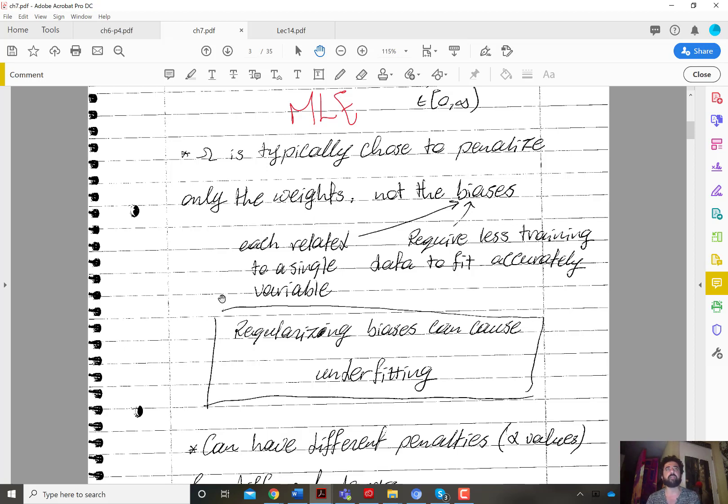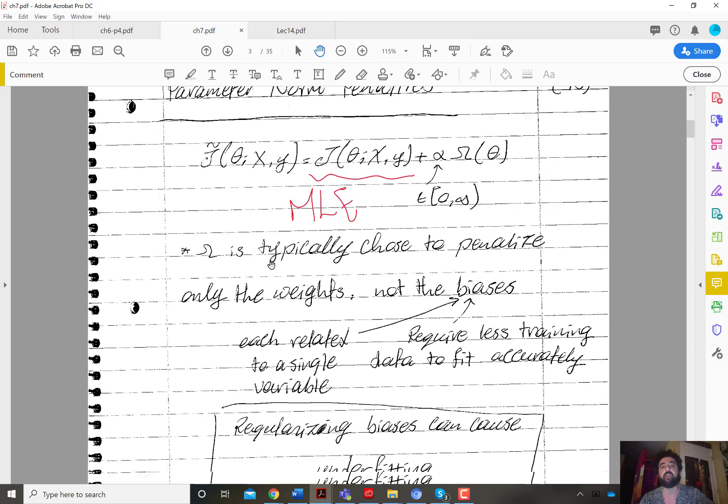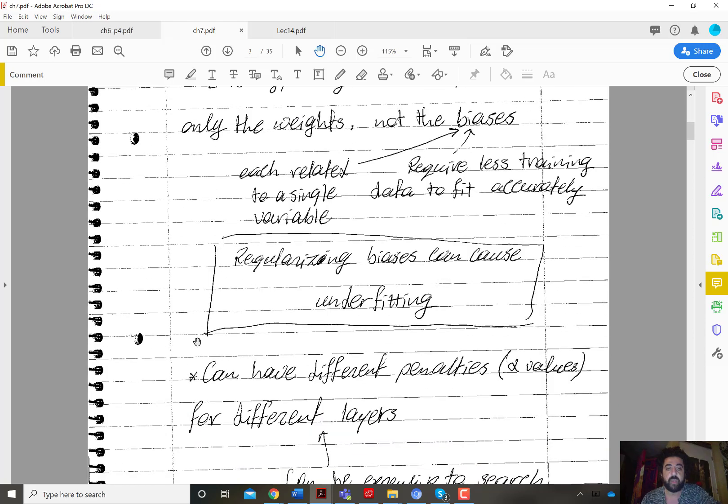Because it doesn't take much to learn the right values of the biases. Usually, the biases learn the expected value that this neuron should have. And it doesn't take a lot of training iterations typically to figure out for the optimization algorithm the right value for the bias. So there is no need in many applications to regularize the bias. And usually, the norm penalty is a function of the weight parameters.